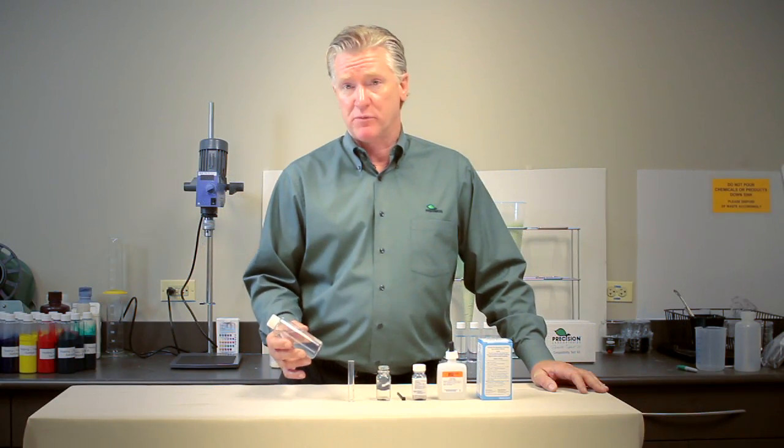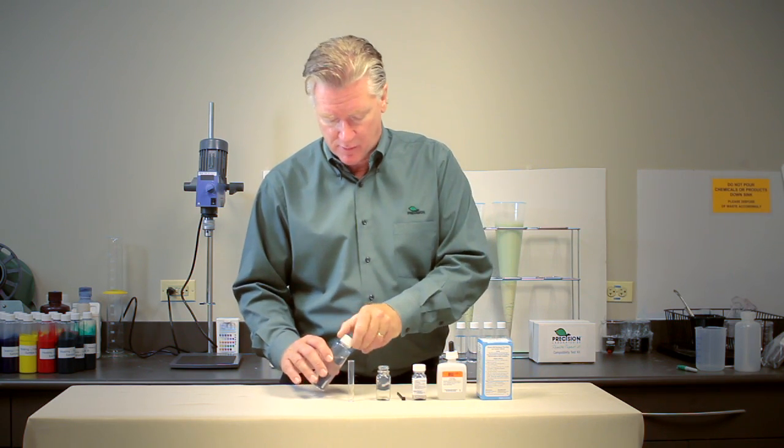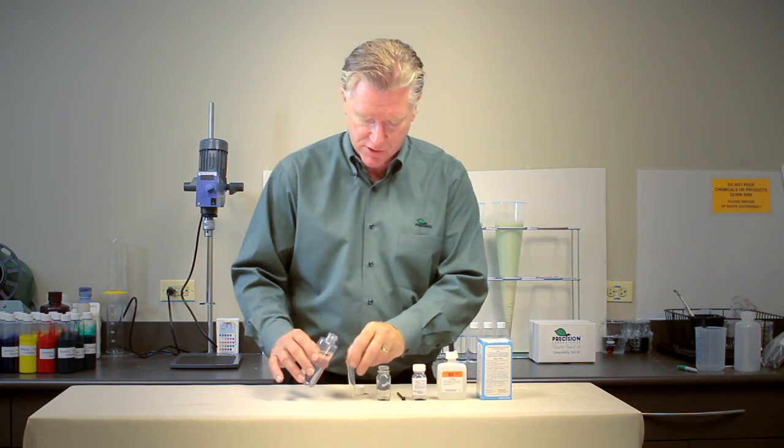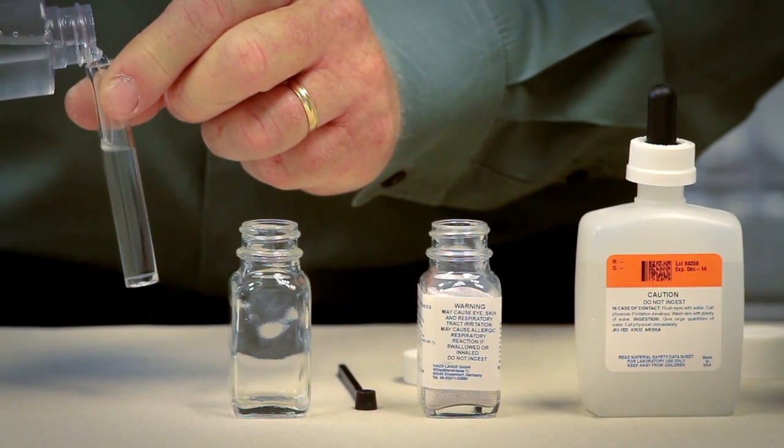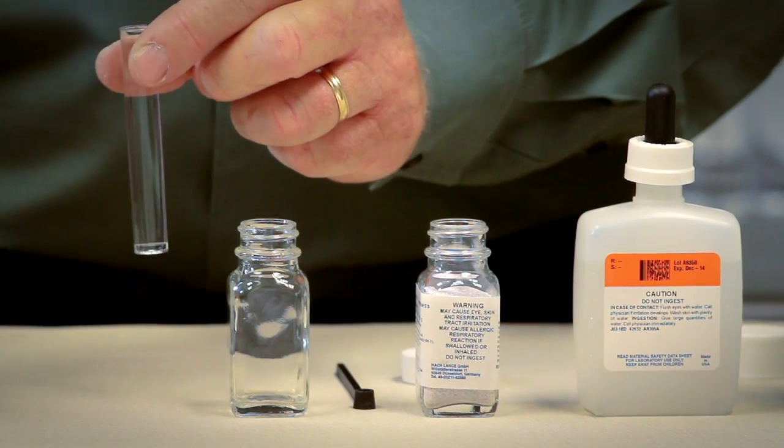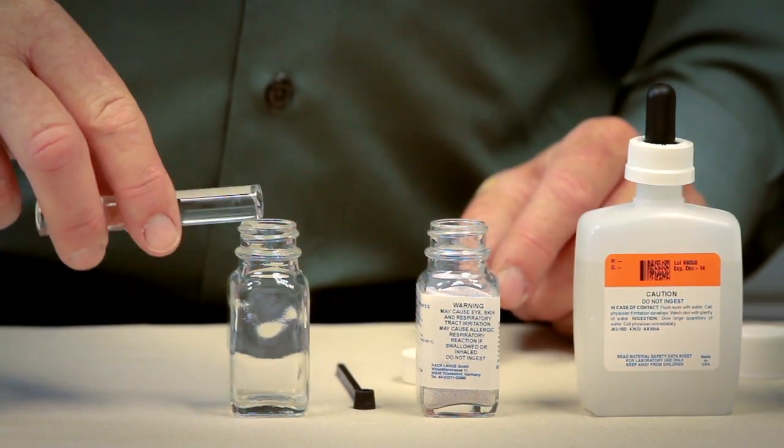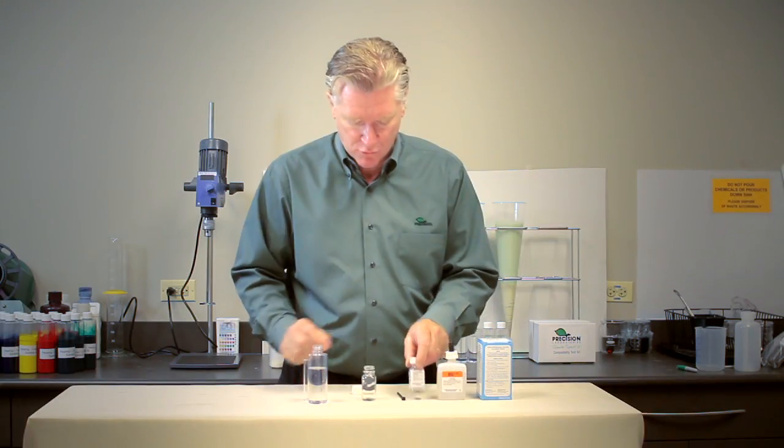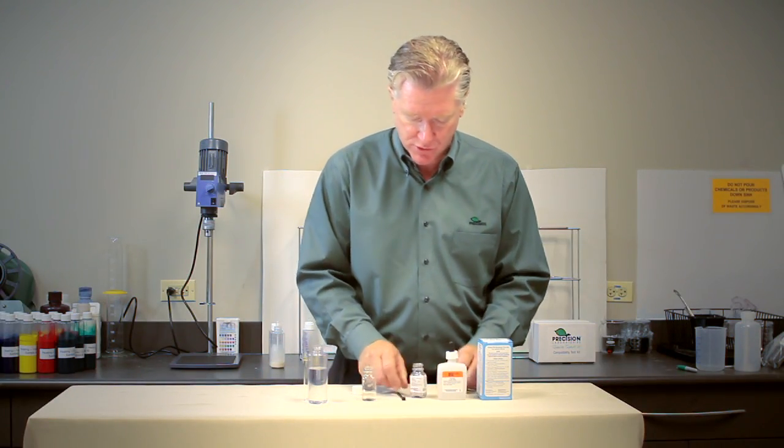So what I've done is I've grabbed a sample of water from the farm and I'm just going to transfer it into the measuring container like this. Now that I've got it measured out I'll put it in the mixing chamber and I'm going to add one level scoop of reagent to it.